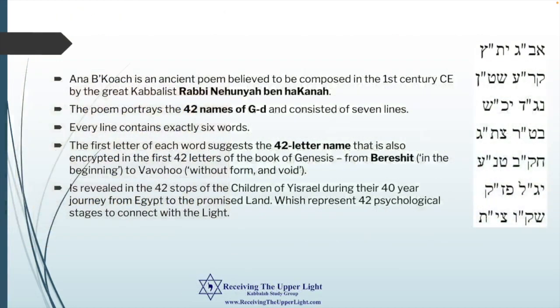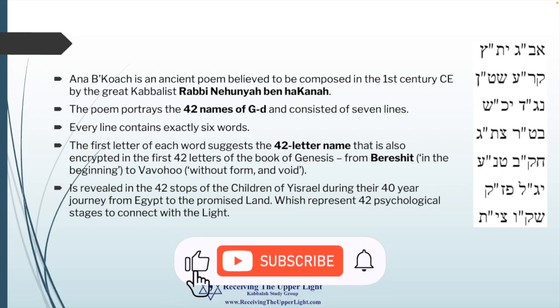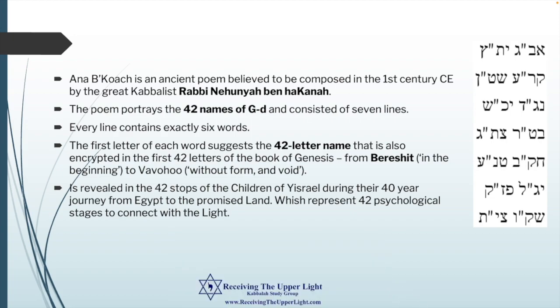The Ana B'Koach is an ancient poem believed to be composed in the first century by the great Kabbalist Rabbi Nehunya ben HaKana. Those of you who have seen the Book of Bahir — the Book of Illumination — know it is attributed to this rabbi as well. The poem of the Ana B'Koach is believed to be composed by this Kabbalist. These 42 letters are also found in other sources, and other prayers use the 42-letter name as a guide for recitation.